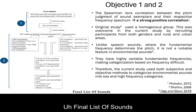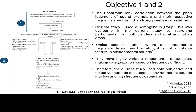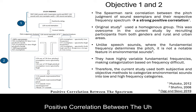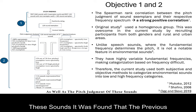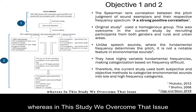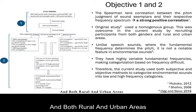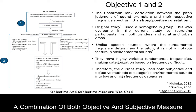The final list had 14 sounds categorized as low pitch, 10 as high pitch, and 13 sounds that could not be categorized, totaling 37 sounds. There was a strong positive correlation between the spectrum and pitch judgment of the sounds. This study overcame limitations of the original study by using people from both genders and both rural and urban areas. Pitch judgment was obtained not just through fundamental frequency alone as in speech sounds, but through a combination of objective and subjective measures.